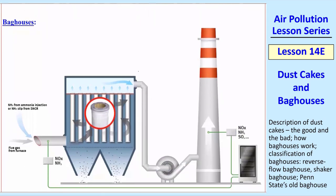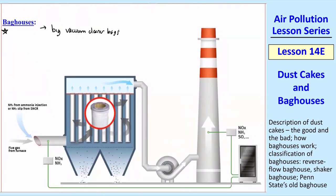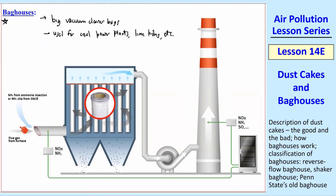Now I want to talk about bag houses. These are basically a whole bunch of big vacuum cleaner bags in a box. They're used for coal power plants, lime kilns, etc. Here's a schematic. The dirty air from the furnace comes in — in this case, the dirty air goes into the outside of the bag and goes through it. Then the clean air comes out the inside of the bag at the top and goes up the stack through a blower. But a dust cake will build up on the outside of these bags, so each of these bags starts building up this dust cake.